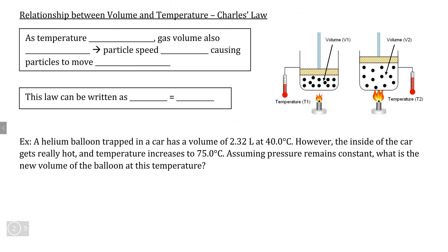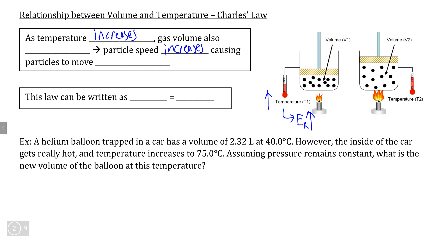Our second gas law examines the relationship between volume and temperature — this is Charles's Law. Temperature is a representation of how much kinetic energy given particles have, so if we increase temperature, we increase the kinetic energy of gas molecules, meaning they move faster. As particle speed increases, the gas particles move farther away from each other, so the volume they occupy is going to increase as well.